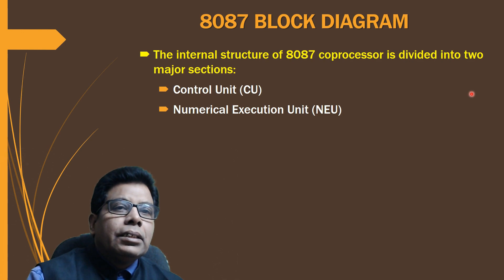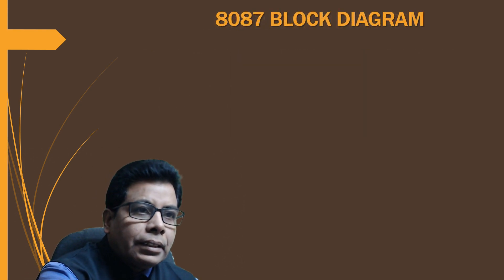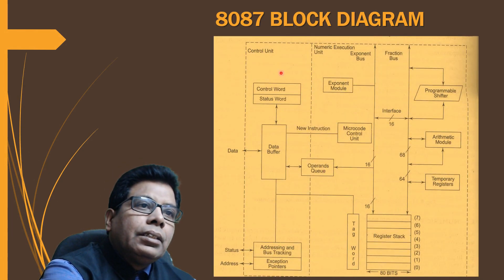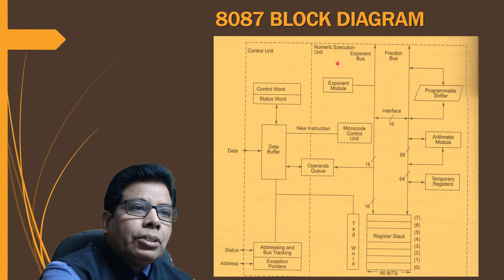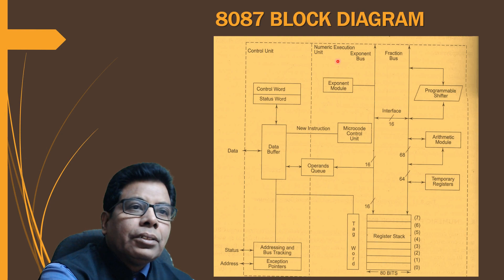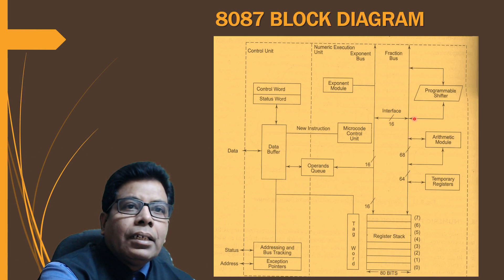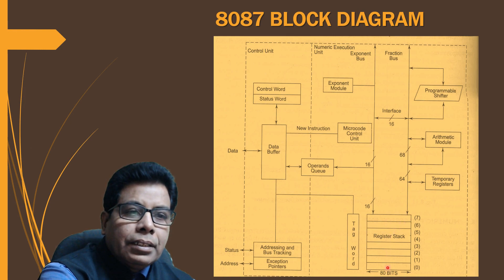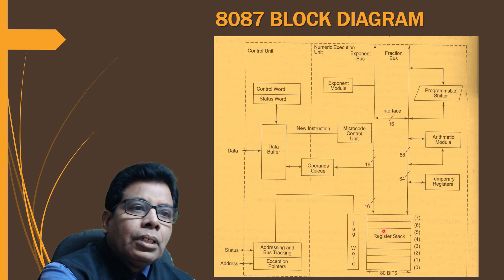The internal structure of the 8087 co-processor is divided into two major sections: the control unit (CU) and the numeric execution unit (NEU). The control unit has a data buffer, control word, status word, and addressing and bus tracking. The exception pointer handles status and address. The numeric execution unit has an exponent bus, fraction bus, programmable shifter, microcode control unit, and eight 80-bit register stacks, along with a tag word.